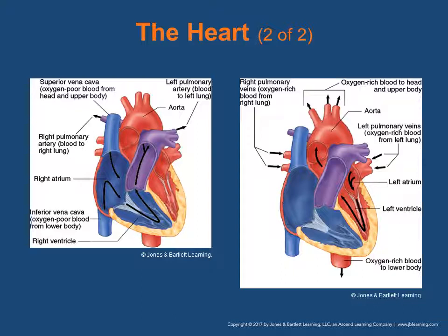The heart returns blood to the left atrium, now oxygen-rich, then to the left ventricle. From the left ventricle, it is ejected with cardiac output into the aorta. The aorta immediately bifurcates to deliver oxygen-rich blood to the head and upper body, then descends downward to deliver oxygen-rich blood to the lower body.